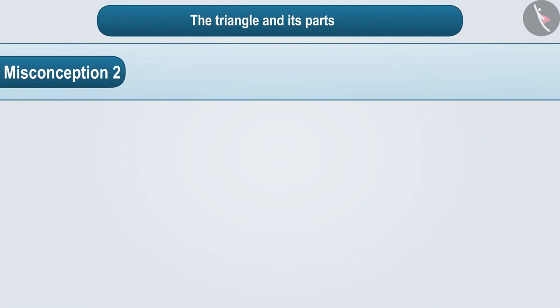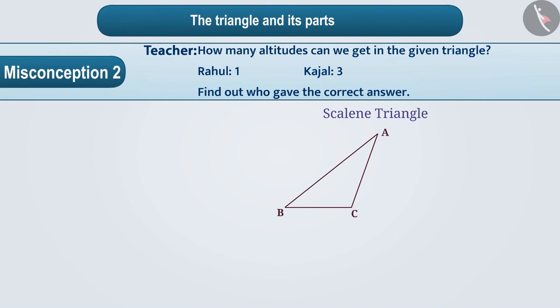Misconception 2: The teacher made a scalene triangle on the board and asked the children, how many altitudes can we get in the given triangle? To this, Rahul replied 1 and Kajal replied 3. Find out who gave the correct answer.